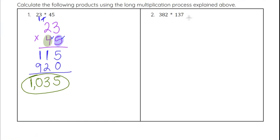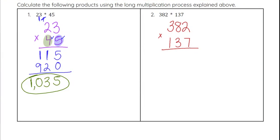Now with 382 times 137, let's set that up: 382 times 137. We start with the 7, and multiply it by the 2, the 8, and the 3. First, 7 times 2 is 14 — we put the ones digit 4 here and carry the 1. Then 7 times 8 is 56, plus the carried 1 gives 57. We write the 7 but carry the 5 above the 3.